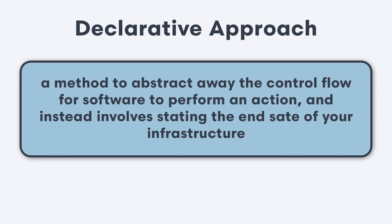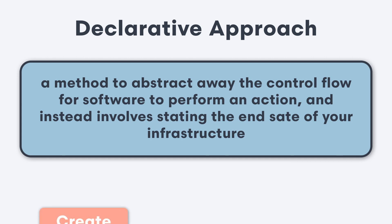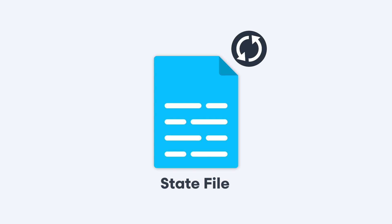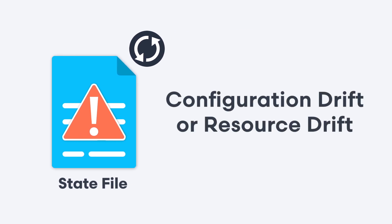When you use a declarative approach to writing configuration files, you describe the end state of your infrastructure, and when you apply those changes your infrastructure as code tool will create, update, or delete any resources that were affected. At the same time your state file will be updated to match what's currently in production. When you make manual changes to your resource configurations the state file will be out of sync and you will encounter something called configuration drift or resource drift.